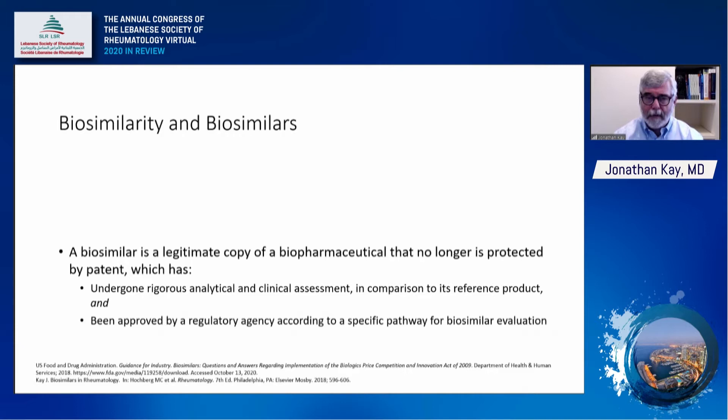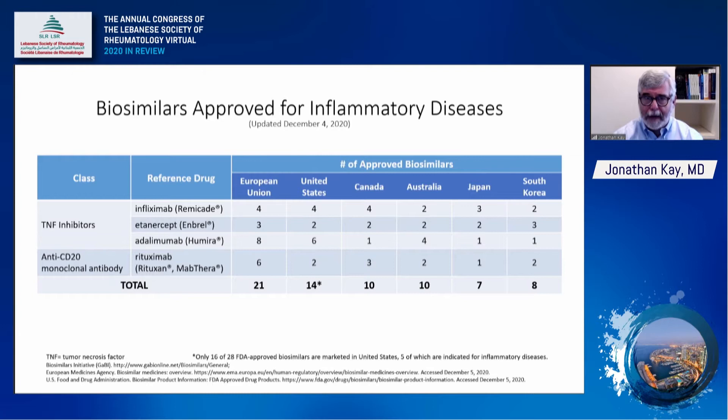There are a number of biosimilars approved for treatment of inflammatory diseases. As of today in the European Union, there are 21 approved: four infliximabs, three etanercepts, eight adalimumabs, and six rituximabs. In the United States, there are 14 approved, but only five are on the market due to unavailability of etanercept and eight adalimumab biosimilars. Canada and Australia each have 10 approved biosimilars, and Japan and South Korea have seven and eight respectively.